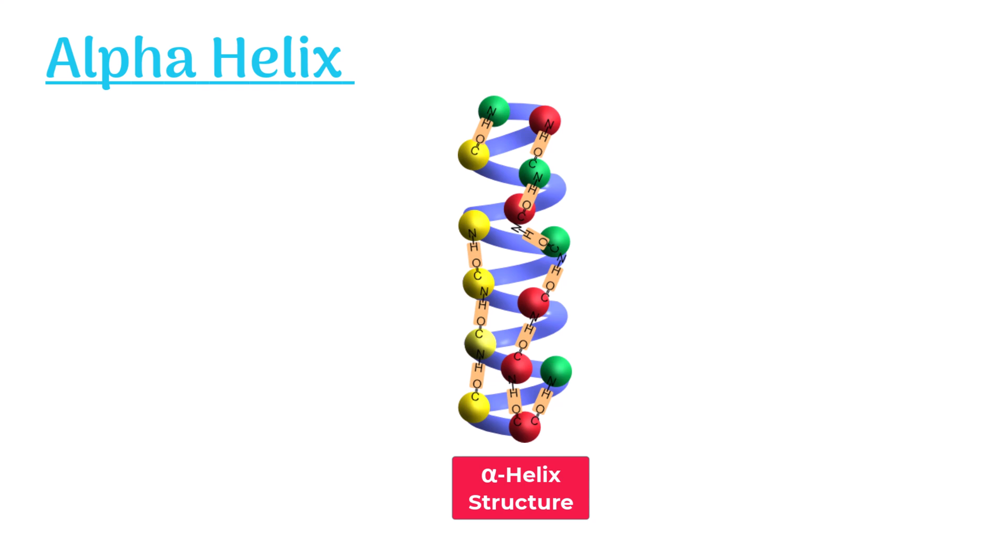Each amino acid in the chain has an amino group and a carboxyl group. The hydrogen bond forms between the oxygen of one amino acid's carboxyl group and the hydrogen of another amino acid's amino group. This bonding forms a stable spiral shape of the helix.